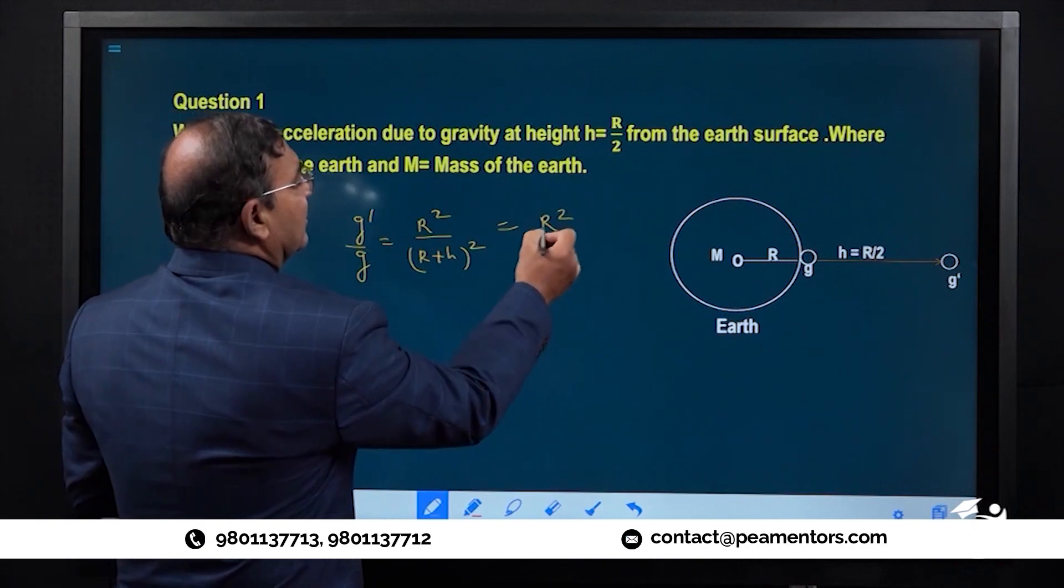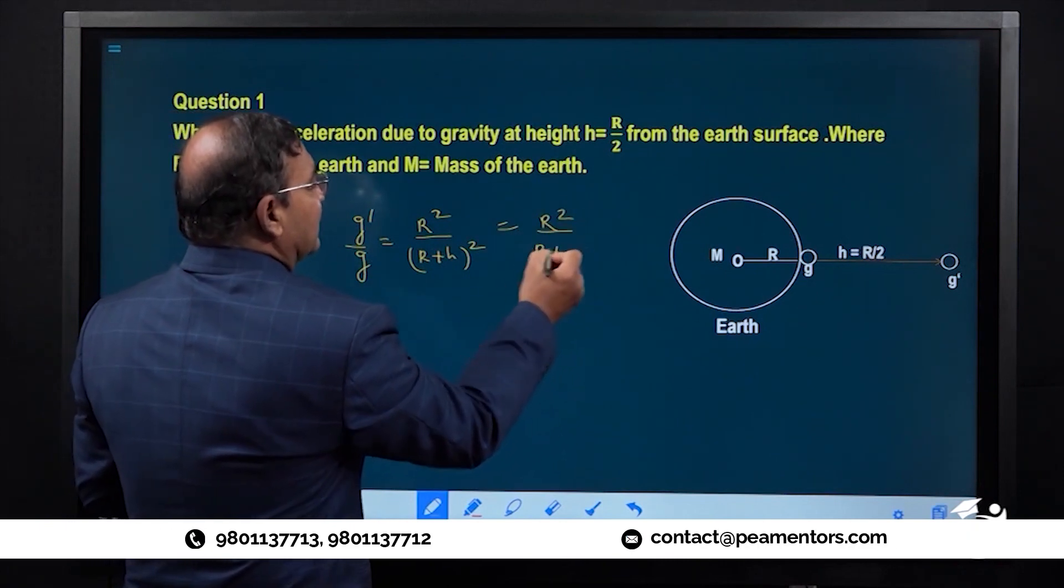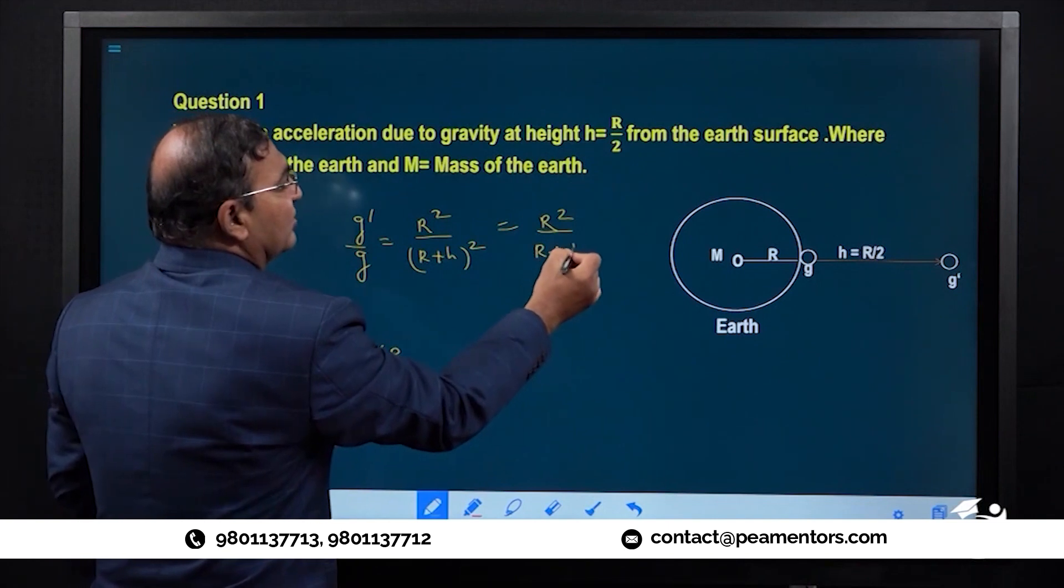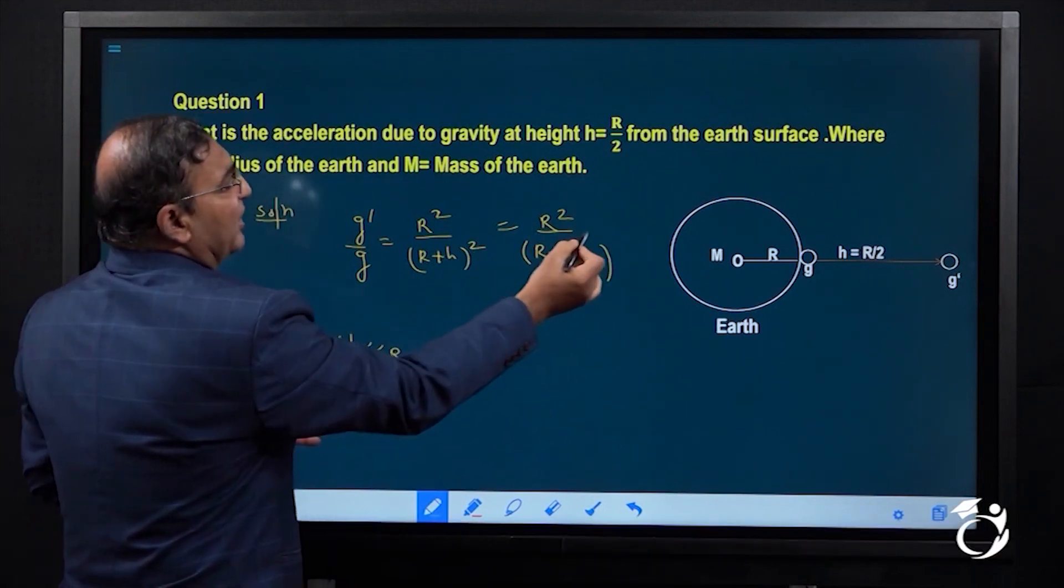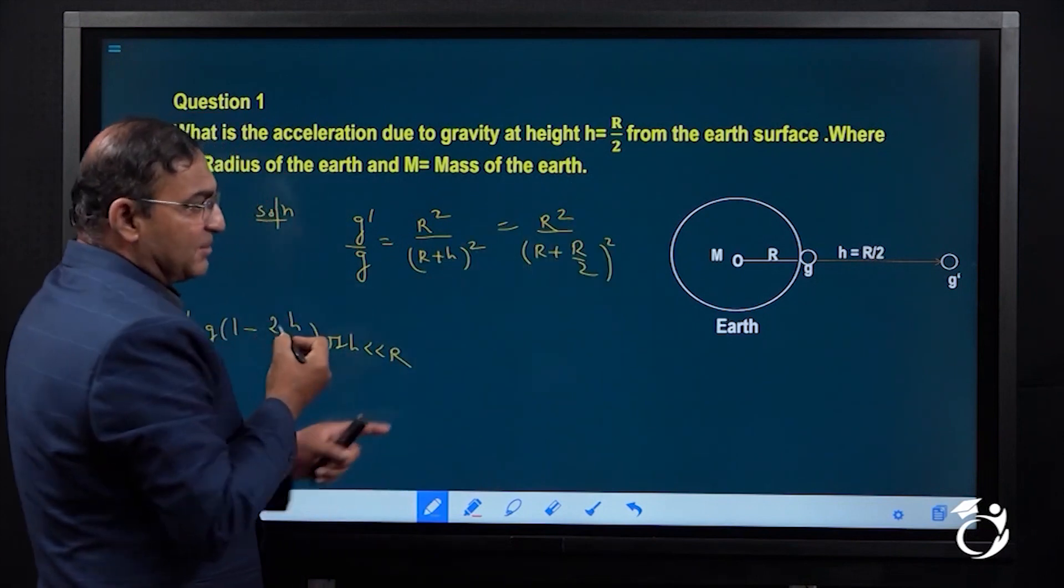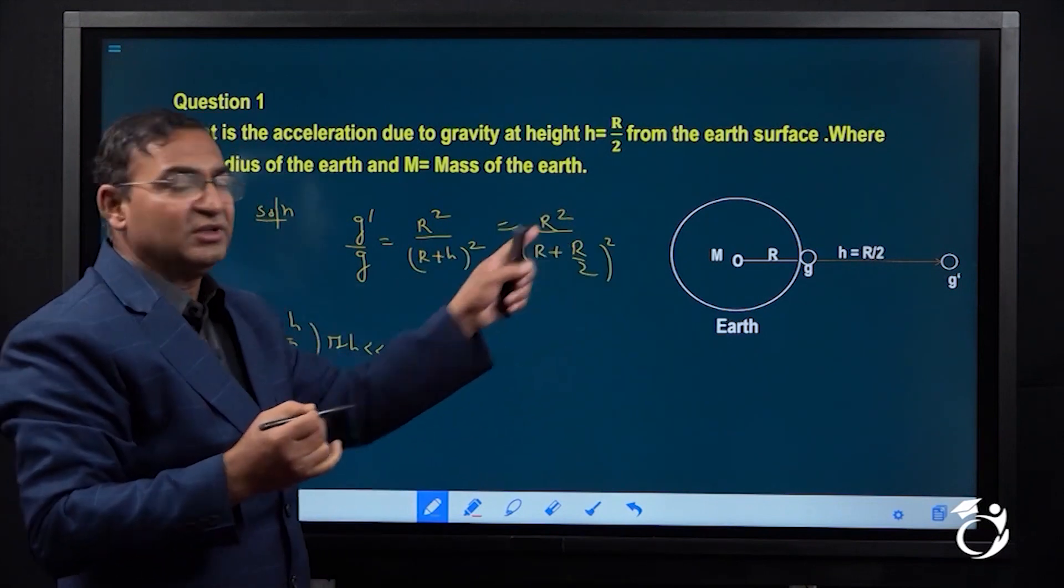h is r by 2. Here we have a square, therefore we have to write a square. After solving, when we solve this one, we get...